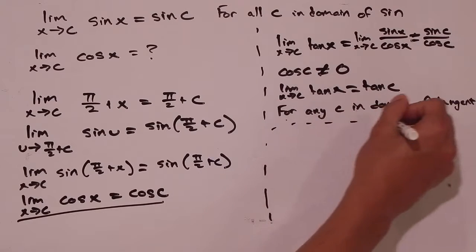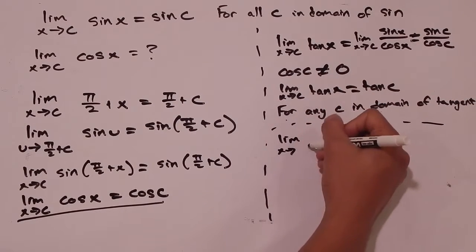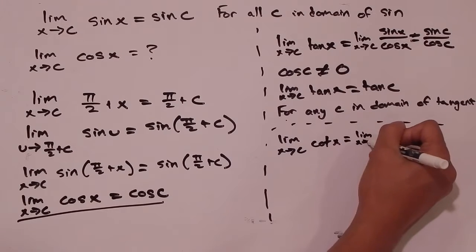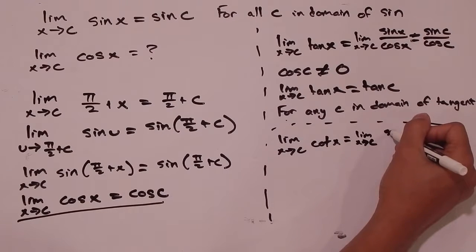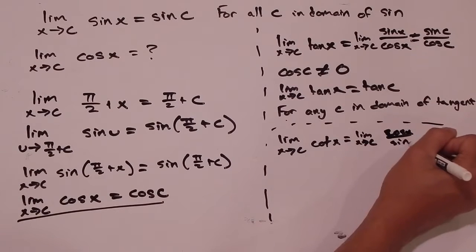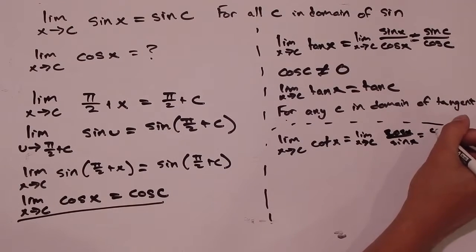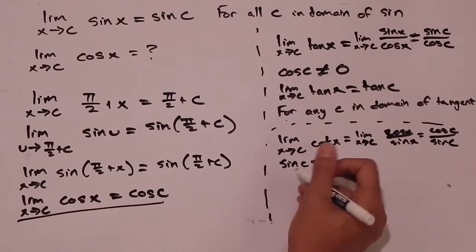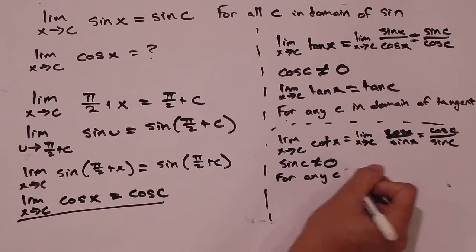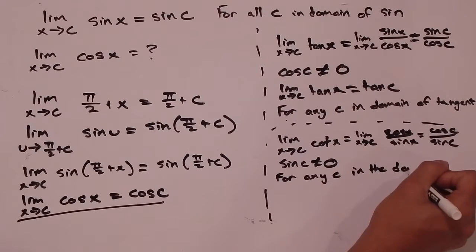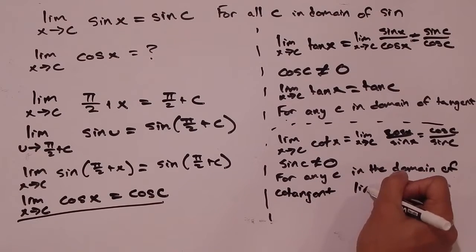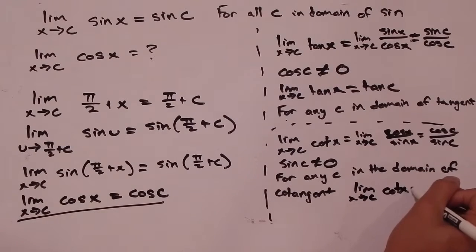We can extend this to cotangent. The limit as x goes to c of cotangent of x, where cotangent is cosine of x over sine of x, is just going to be cosine of c over sine of c, provided that sine of c does not equal 0, or that c is in the domain of cotangent. That lets us know that the limit as x goes to c of cotangent of x is equal to cotangent of c.